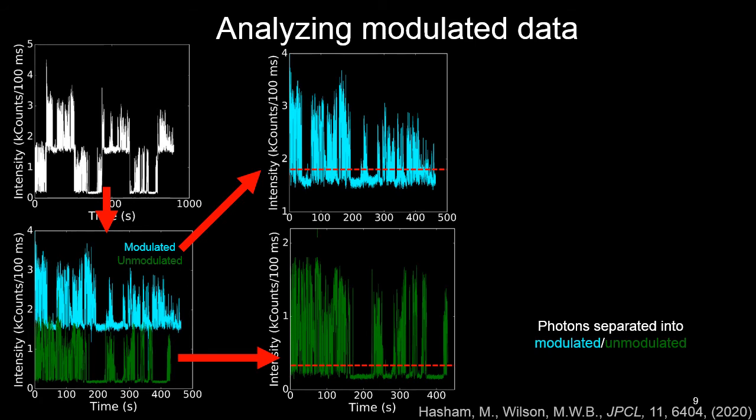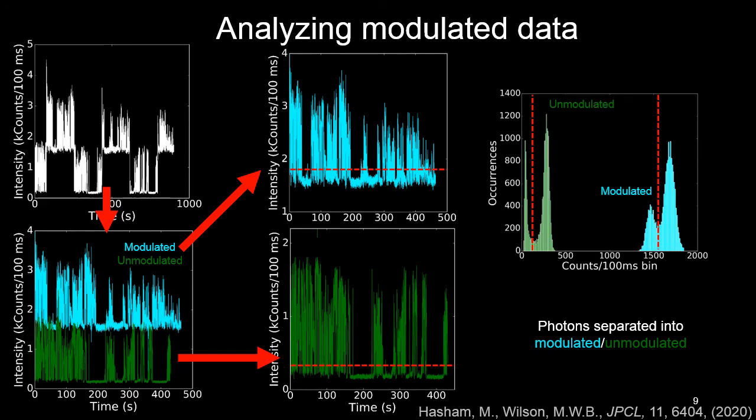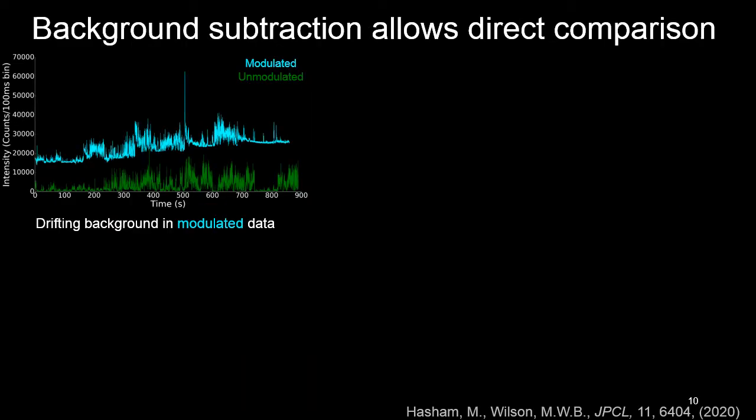We'll threshold the intensity traces, generate the histograms, and what you can see here, which is quite important actually, is that the bimodality remains not just in the unmodulated data but in the modulated data.